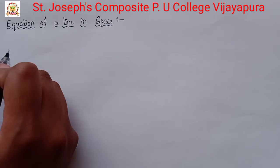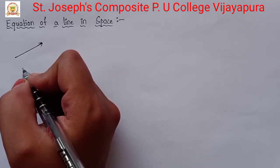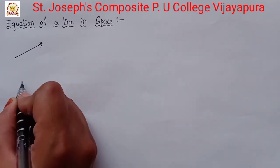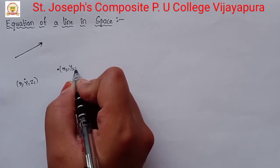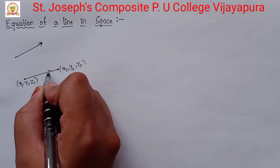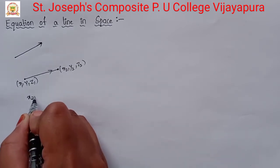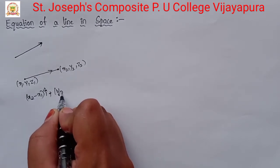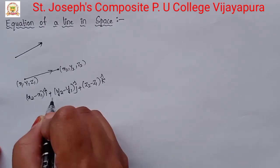In our last chapter, that is in vector algebra, we studied how to find the vector representation of a line. Suppose you have a line — we know how to represent it in vector form: xi plus yj plus zk. Or if you have two points, say x1, y1, z1 and x2, y2, z2, joined by a line having some direction, then the vector representation is: (x2 minus x1)i + (y2 minus y1)j + (z2 minus z1)k.